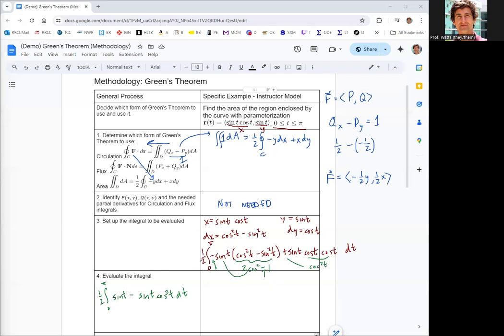Now we're down to a calc one integral, maybe a calc two integral. Antiderivative of sine is negative cosine, and then the antiderivative of negative sine cosine squared is positive one third cosine cubed. Evaluating that at the endpoints, cosine of pi is negative one, so you get negative negative one, and then negative one cubed. Then when you evaluate at zero, cosine of zero is one, so negative one plus one third.